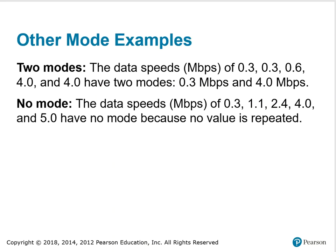Other mode examples. The data speeds in megabits per second of 0.3, 0.3, 0.6, 4.0, and 4.0 have two modes because 0.3 occurs twice in the data set and 4.0 occurs twice in the data set, so we say that there are two modes. In the next example, we see the data set doesn't have any repeated data values; therefore, there is no mode in that data set.